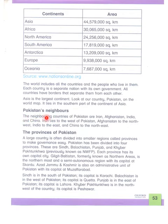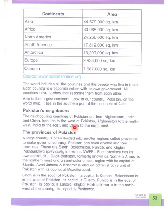Pakistan's neighboring countries are Iran, Afghanistan, India, and China. Iran lies to the west of Pakistan, Afghanistan to the northwest, India to the east, and China to the northeast.